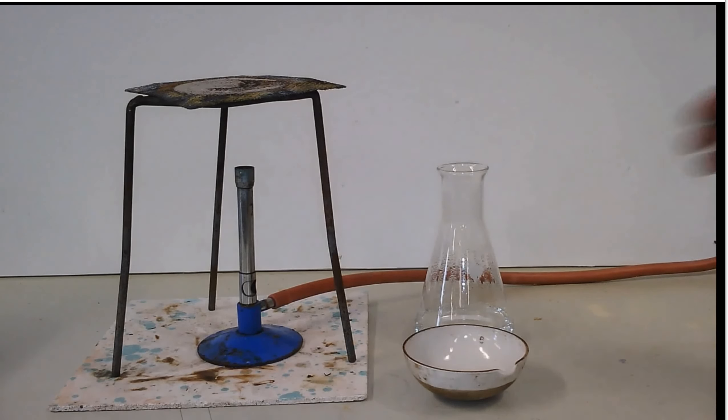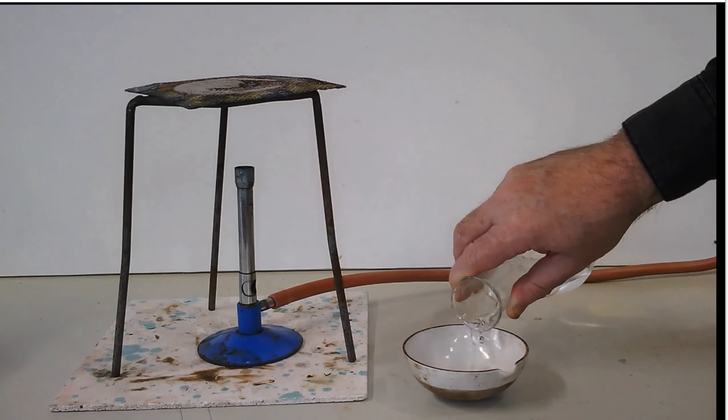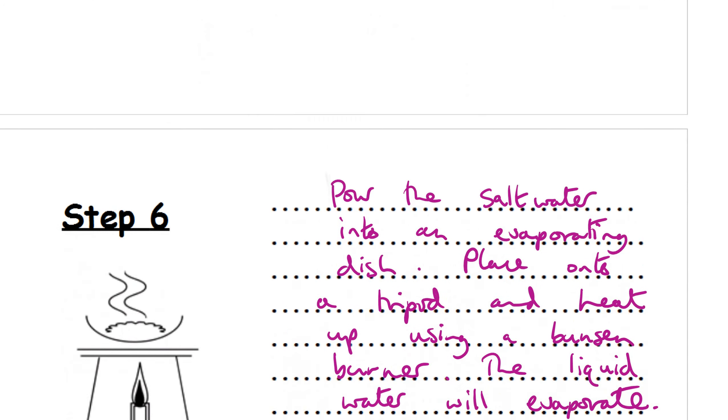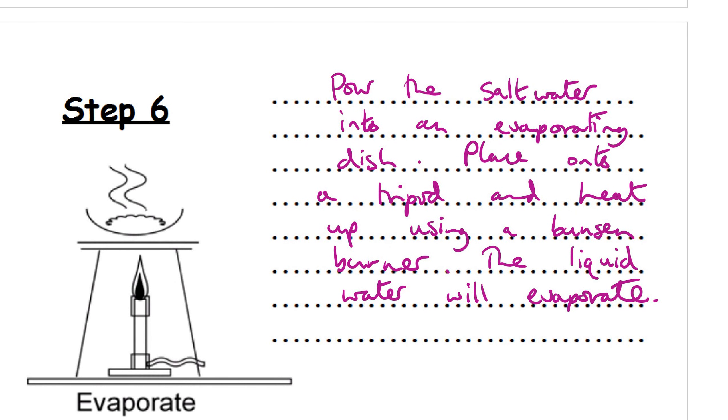Just about all of the salt plus the water has got through now. Take away the filter and funnel, pour the filtrate into an evaporating dish, that little dish there. So step six. Pour the salt water into an evaporating dish. Let's label that up. That there is an evaporating dish. Place onto a tripod and heat up using a Bunsen burner. The liquid water will evaporate.